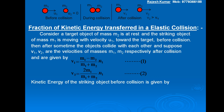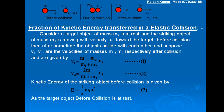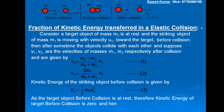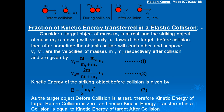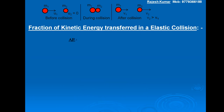Now, the kinetic energy of the striking object before collision is given by E1 = ½ M1 U1², let this be equation 3. As the target object before collision is at rest, therefore the kinetic energy of the target object before collision is zero. Hence, the kinetic energy transferred in the collision equals the kinetic energy of the target after collision, given by ΔE = ½ M2 V2².